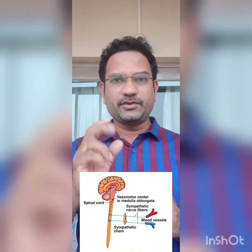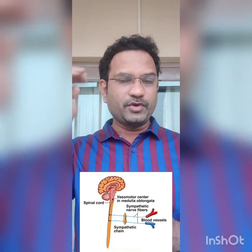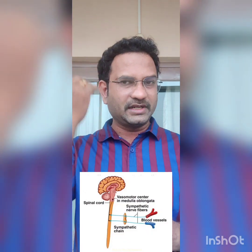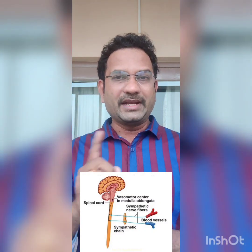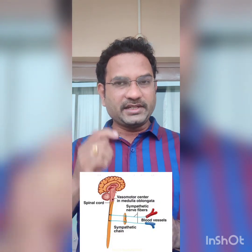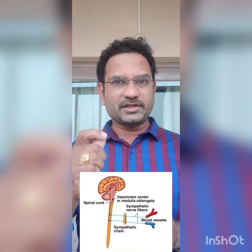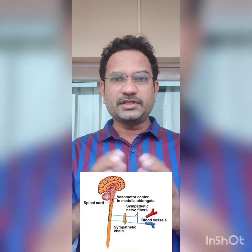Motor center — 'motor' means information comes from the central nervous system to peripheral organs, as opposed to sensory input which goes toward the CNS. So whenever there is a fall in blood pressure, the vasomotor center senses it and activates the sympathetic nervous system, which affects the blood vessels and raises blood pressure. This is how the vasomotor center controls blood pressure.